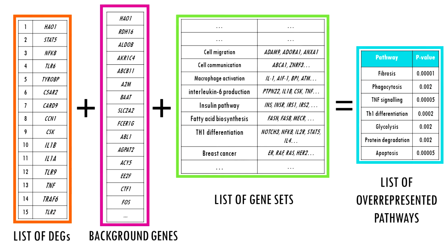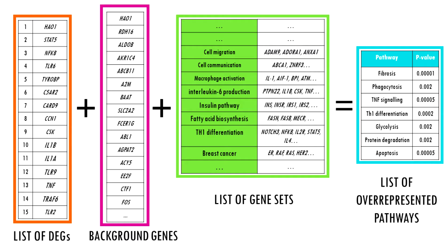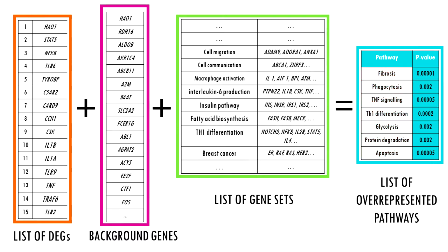So as we saw, pathway enrichment analysis methods take a list of differentially expressed genes as input and identify the gene sets in which the differentially expressed genes are over-represented or under-represented. So you're basically summarizing long lists of genes into shorter lists of pathways. The significance of each pathway is measured by calculating the probability that the observed number of differentially expressed genes in a given pathway are simply observed by chance, so lower p-values mean the pathway is actually over-represented.